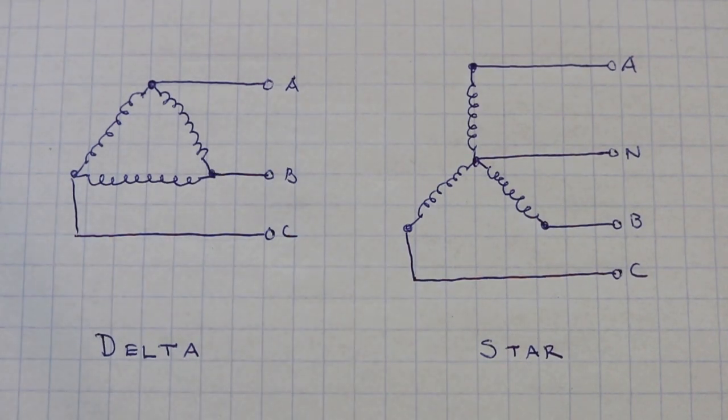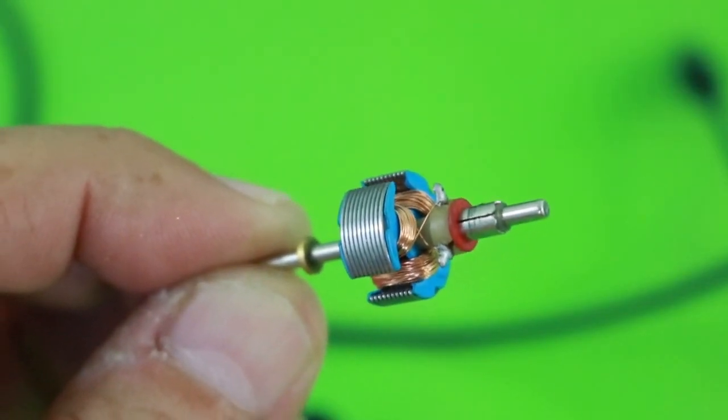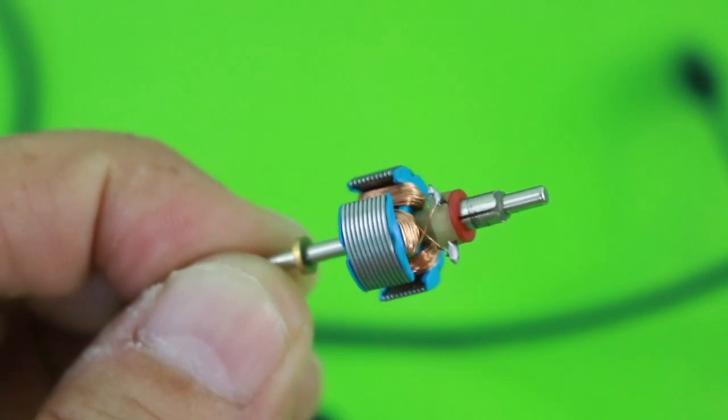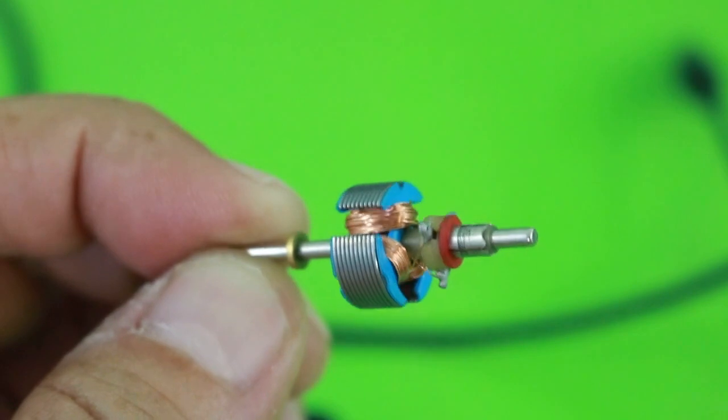The three-phase generators have three coils that can be connected in two ways, delta connection and star connection. In the delta, we have the three phases A, B and C. And in the star connection, we also have three phases A, B and C. But we have a neutral point.